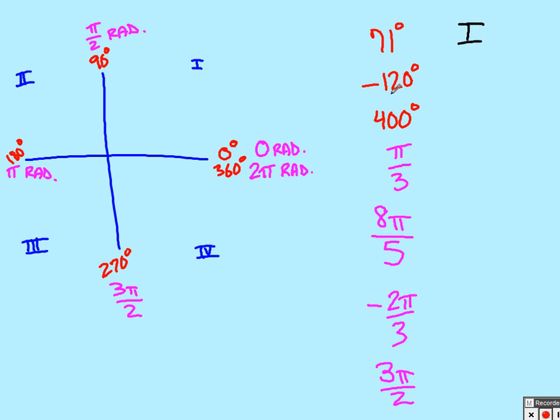Next one is negative 120. Well, 120 would be in quadrant 2, but because it's negative, we need to go that same distance in the other direction. So this is going to put us in quadrant 3.